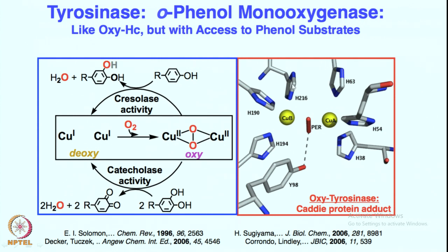Looking at the copper centers with three histidines on each, the phenol sits very close to this copper peroxo intermediate and gets overall oxygenated at the ortho position to give catechol. If catechol is used as a substrate, it can react further with this peroxo intermediate to give the quinone product. This activity — phenol to catechol formation — is called cresolase activity, and catechol to quinone formation is called catecholase activity. Overall, tyrosinase is a fascinating enzyme which performs beautiful and simple chemistry by utilizing the reactive copper-oxygen species.